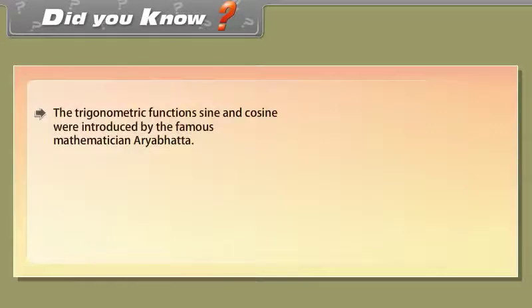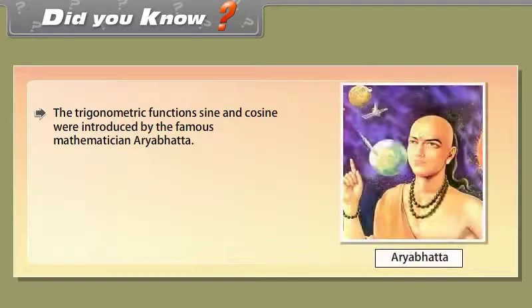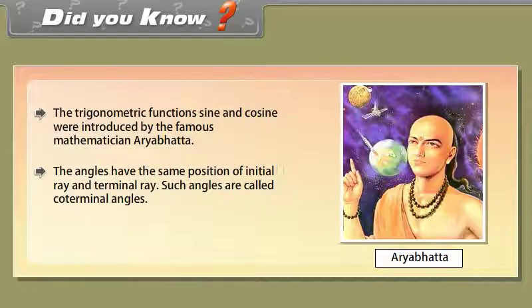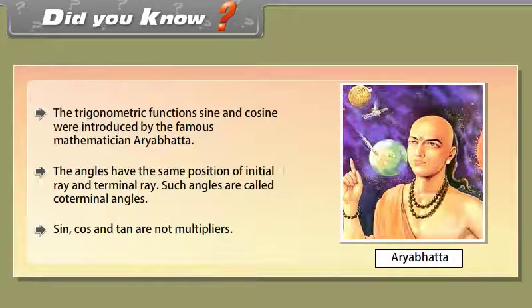Did you know? The trigonometric functions sine and cosine were introduced by the famous mathematician R.A. Bhatt. Angles that have the same initial ray and terminal ray are called coterminal angles. Note that sine, cos and tan are not multipliers.